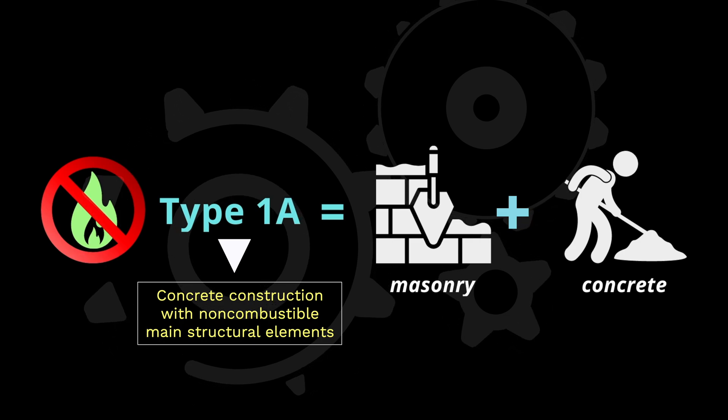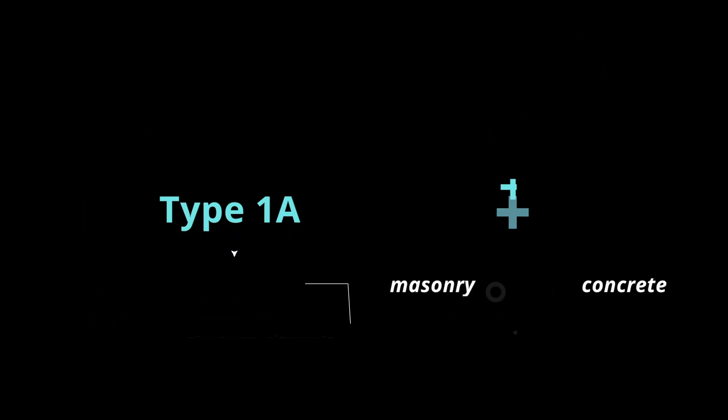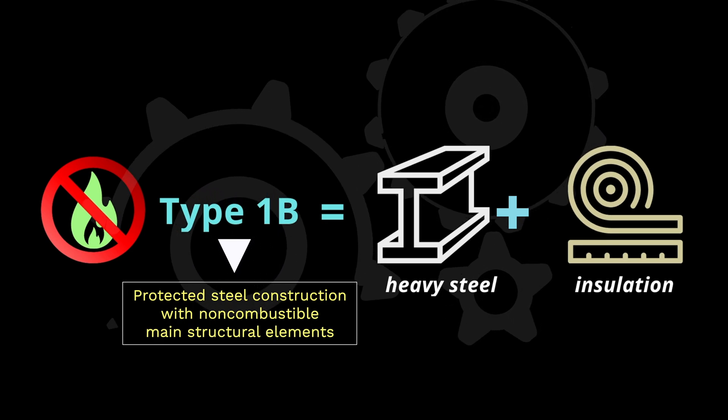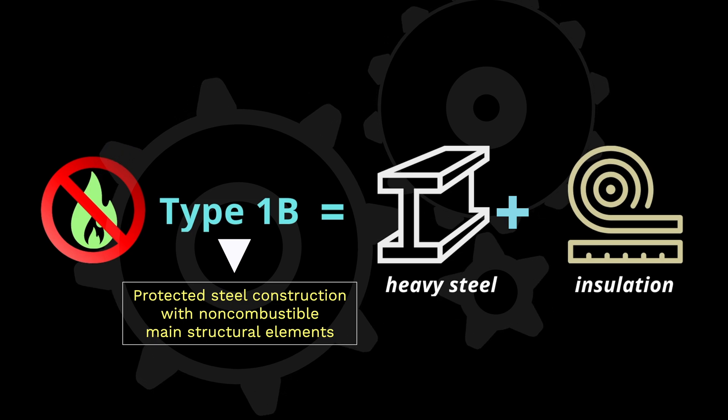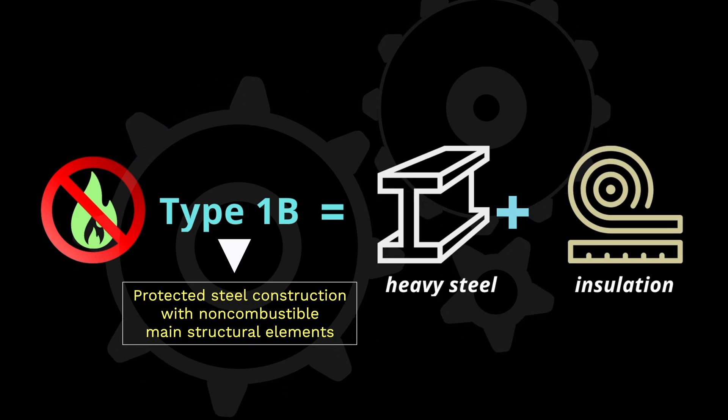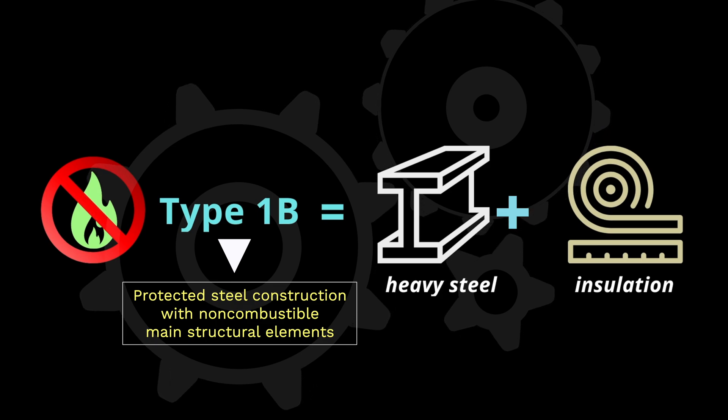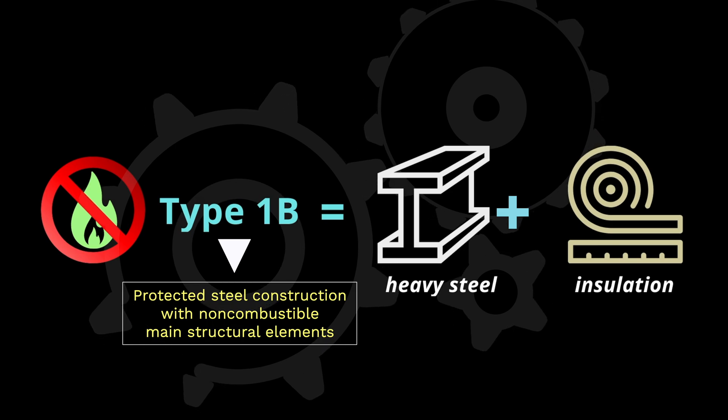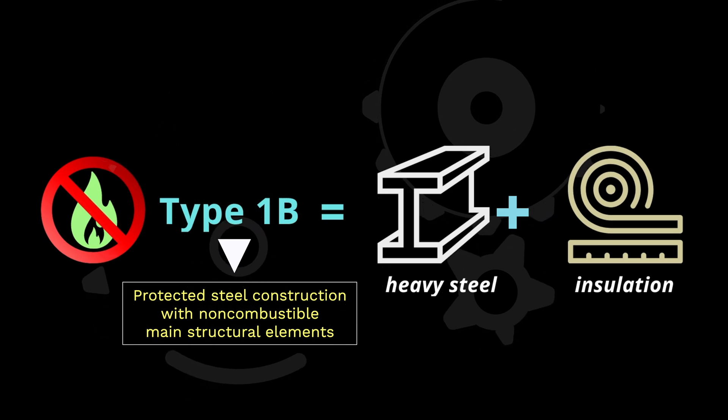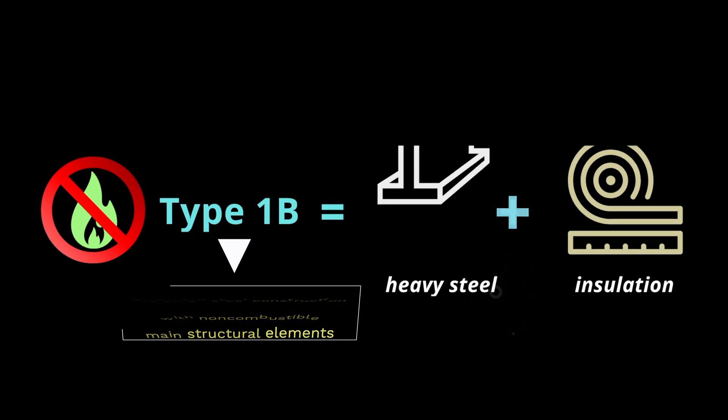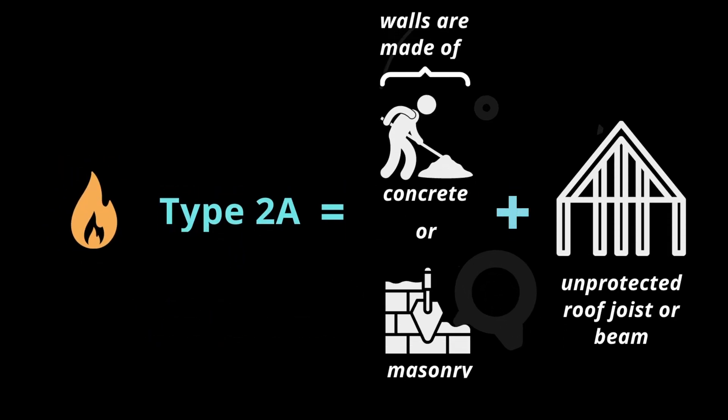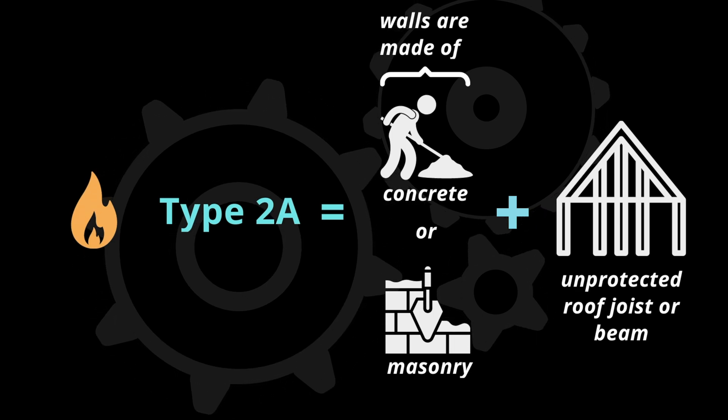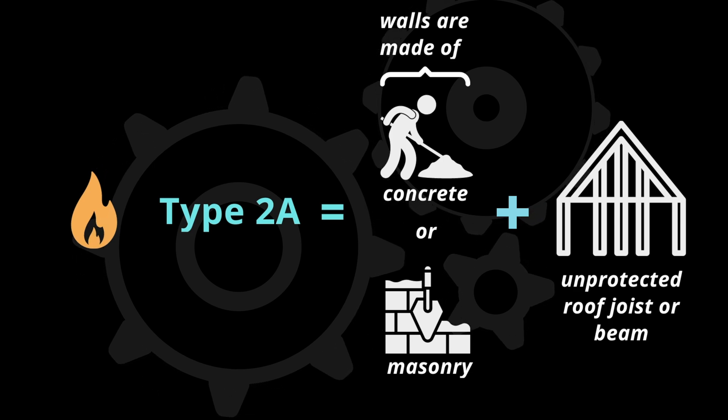Type 1B is made of protected steel construction, and its main structural elements are non-combustible like Type 1A. The word 'protected' means that the steel members used for this type of construction are insulated. These insulations protect the steel from possible damages that the fire could inflict. The structural elements of the exterior walls of Type 2A are made of concrete or masonry, with its roof joists and beams unprotected or uninsulated.